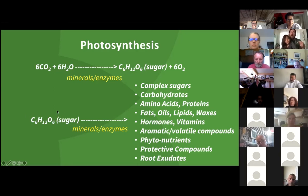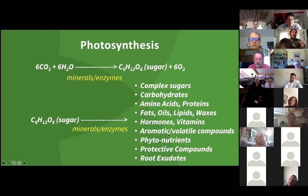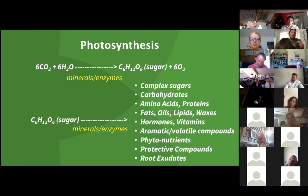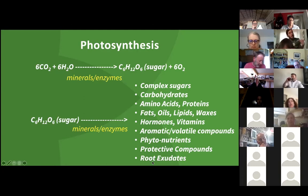Using the carbon from the sugar, the plant stitches it together in other ways to make fats, lipids, waxes, oils, hormones, plant growth-promoting compounds, vitamins, smells and scents — aromatic or volatile organic compounds — colors, pigments, phytonutrients, and all the antioxidants we think about from a human health perspective. It can also produce a range of defense chemicals and protective compounds that fuel its immune system, deter insect pests, and fight off diseases, as well as root exudates — carbon compounds excreted from the root system that play a really important role in building soil organic matter.